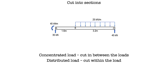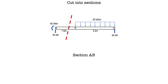After that, we have to cut the beam into sections. If the beam is subjected to a concentrated load, then we cut the section in between the loads. But if the beam is subjected to a distributed load, then we cut the section within the load. The first section is AB, and the second is section BC.